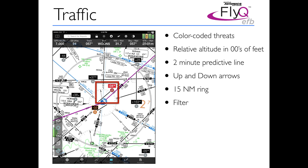Looking at the red threat target in the middle: you can see why it's a threat — it's going to be almost crossing our flight path line, and its altitude is negative 04, meaning 400 feet below us. More interestingly, there's an arrow next to it pointing up, meaning that plane is climbing. So it's definitely going to be a threat to us.